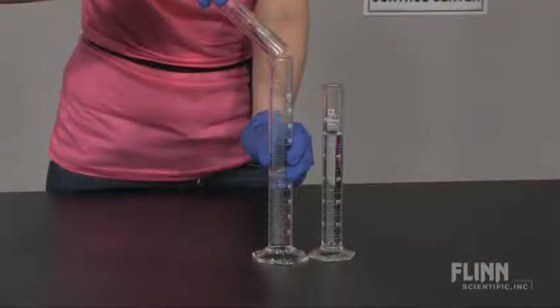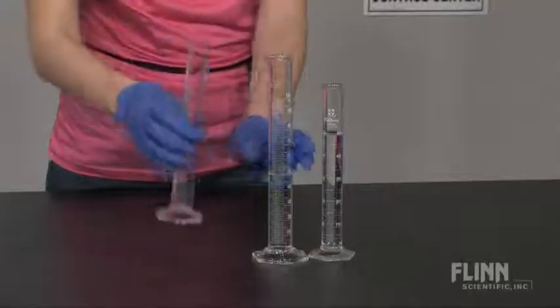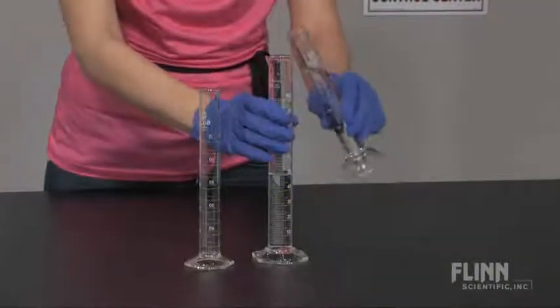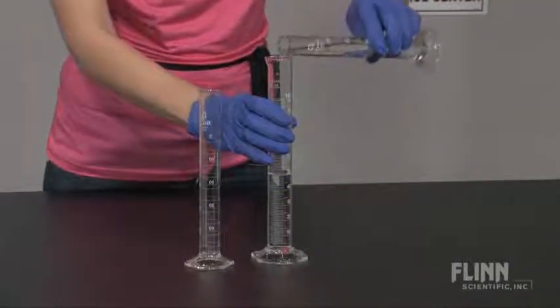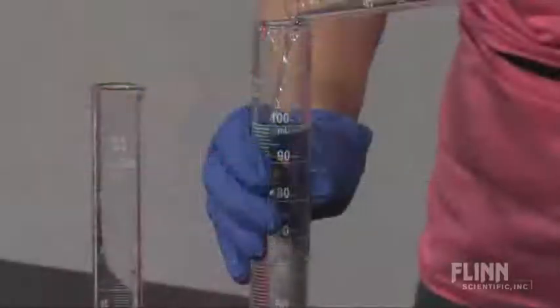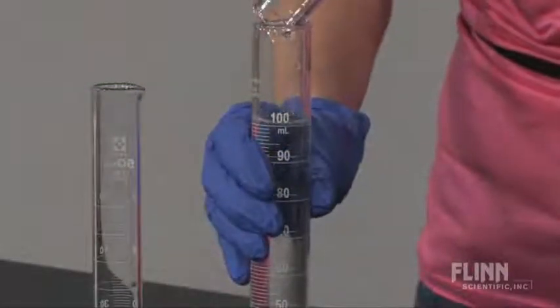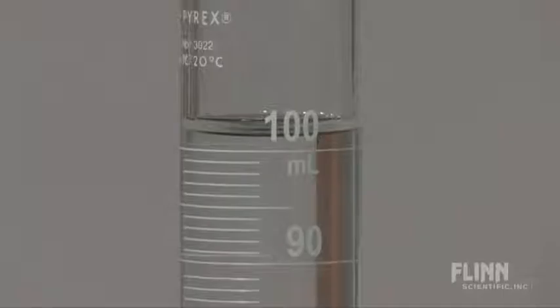When you combine 50 milliliters of hydrochloric acid and 50 milliliters of sodium hydroxide, a volume greater than 100 milliliters is produced. This is due to the different densities of the reactants and products.